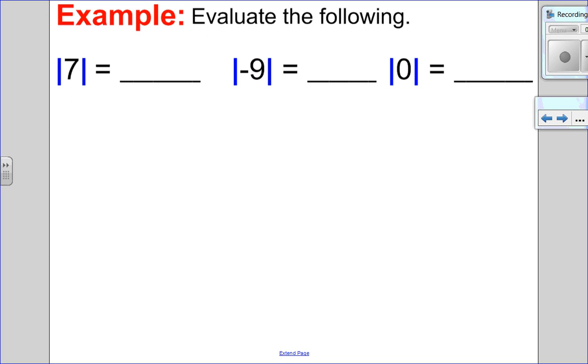So I want you to pause the video and quickly evaluate these to make sure that you understand what absolute value is. So the absolute value of 7, 7 is to the right of 0, it's 7 units away from 0, so its absolute value is 7. Negative 9 is to the left of 0, it is 9 units away from 0, so the absolute value is 9. Absolute value of 0. Well, 0 is itself 0, so it is no distance away from 0, so the absolute value would be 0.